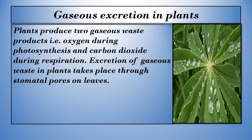Gaseous excretion in plants: plants produce two gaseous waste products, i.e. oxygen during photosynthesis and carbon dioxide during respiration. Excretion of gaseous waste in plants takes place through stomatal pores and leaves.